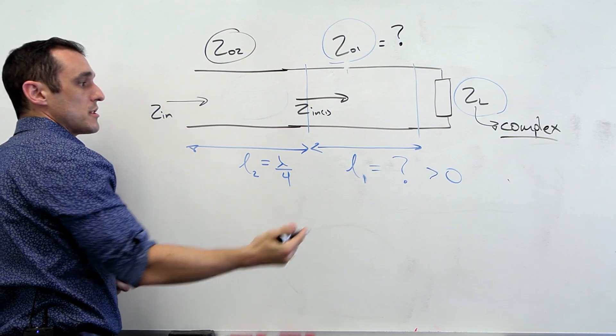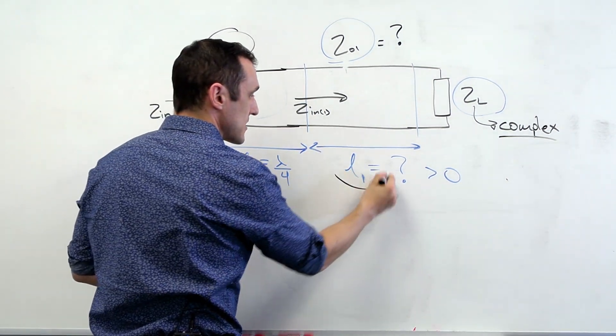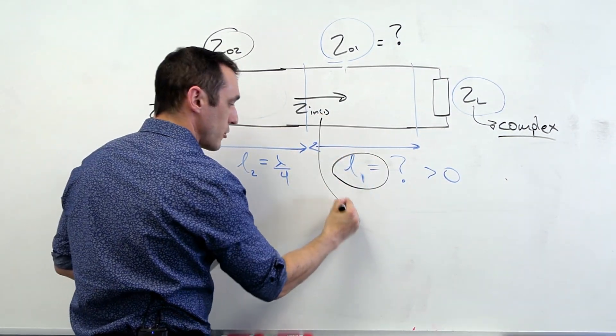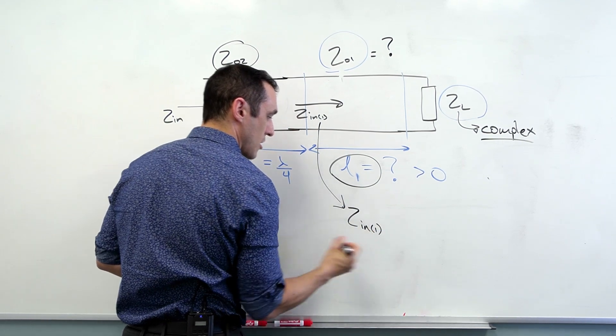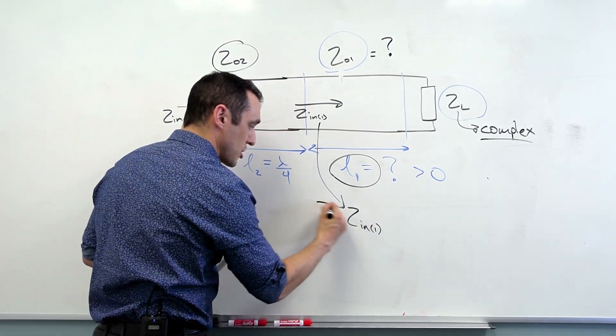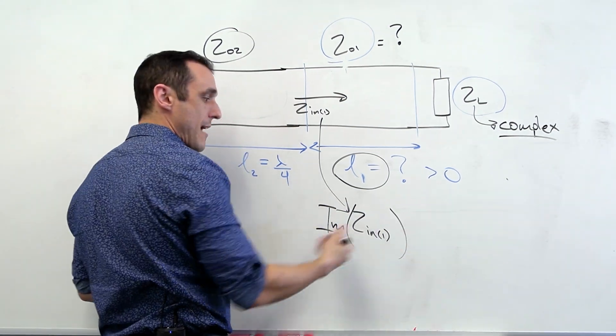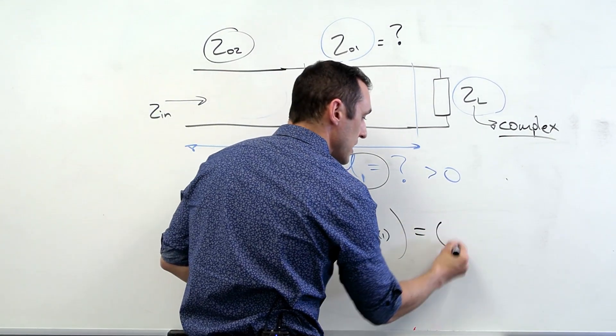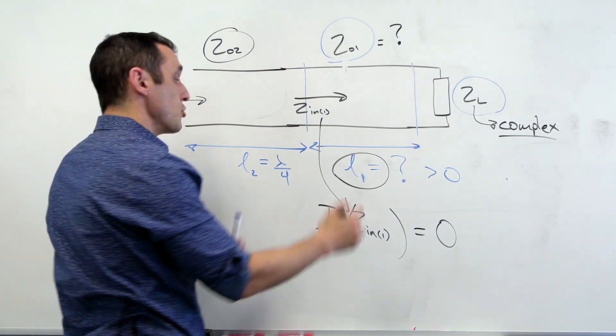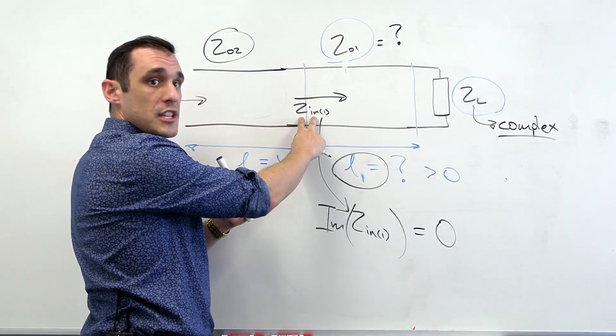And then the input impedance looking into this section, Z sub in, will then be given by the reflection between Z02 and then this input impedance Zn1. In doing this type of design and in setting this length to lambda over four, what you actually need to do is design this such that this length gives you an input impedance for this first section with an imaginary part equal to zero. You want this input impedance to be purely real.